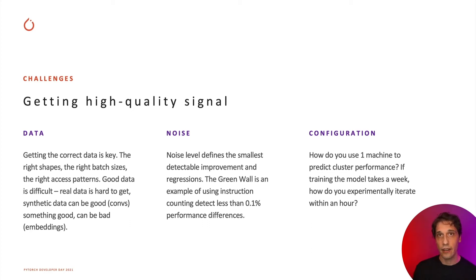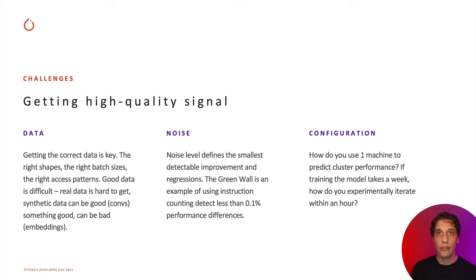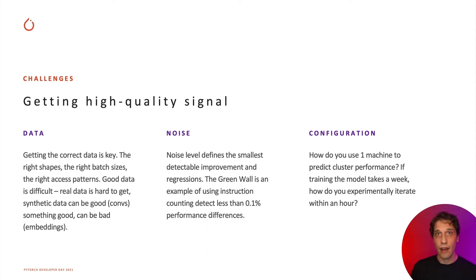The other big challenge that we run into when understanding performance is configuration. You can have the same model and change shapes, and having new shapes in that model can greatly influence the performance and give you an entirely different profile for how the model is performing. Just because you're optimizing a transformer and trying to make PyTorch faster for transformers doesn't mean everyone's transformer is getting faster, because people are using different shapes, different sizes, and a different number of layers. We have to account for all this when improving performance.